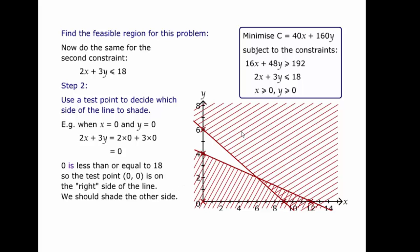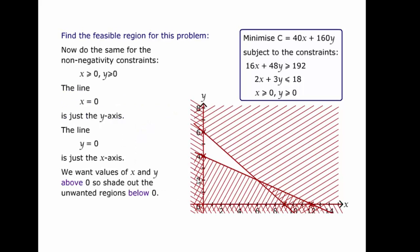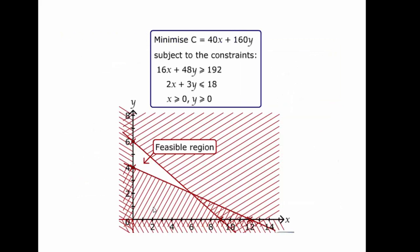Okay, so we can see here we're nearly there. We just need to add non-negativity constraints now. Like so. So x is greater than or equal to 0. So we shade off the bit where x is less than 0. And y is greater than or equal to 0. And we always end up with a polygon. In this instance, we've got a triangle. There's our feasible region.